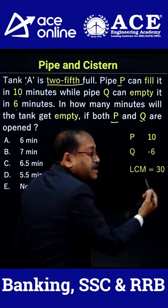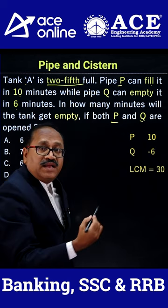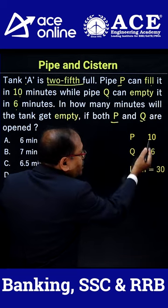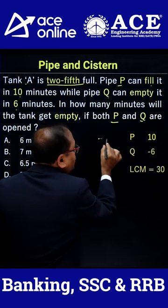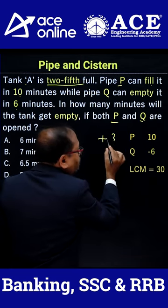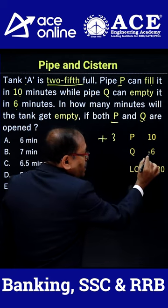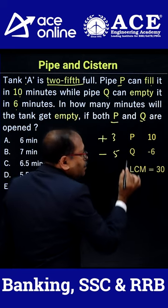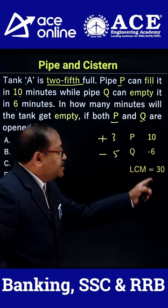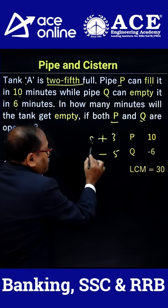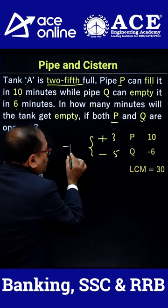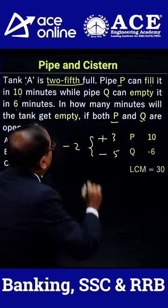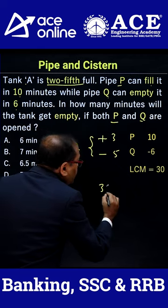The LCM of 10 and 6 is 30. So 30 divided by 10 equals 3 units — pipe P fills 3 units per minute. Pipe Q empties 5 units per minute (30 divided by 6). So per minute, the net total is 2 units getting emptied.